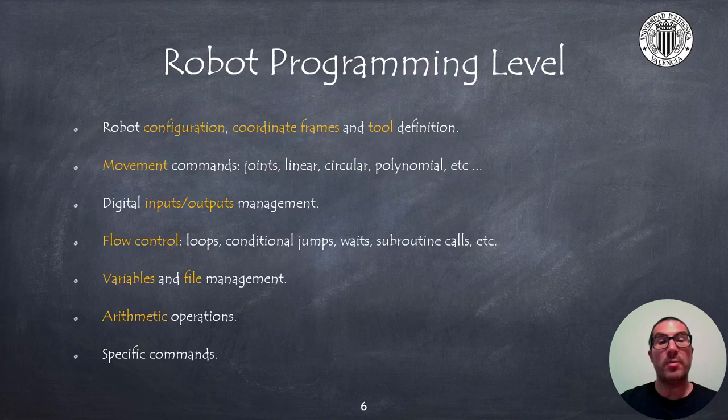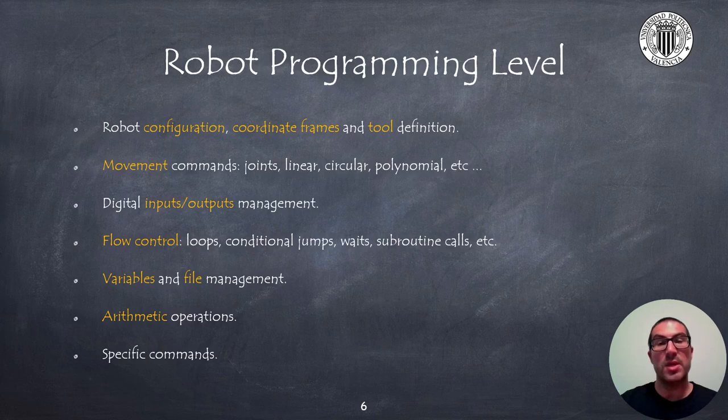In general, all robot programming languages will include a set of instructions that will allow you to define robot configurations, set different coordinate frames, as well as the type of tool. They have movement instructions to control robot joints with coordinated and non-coordinated movements, to perform linear or circular movements, and you can set the maximum admissible speed, acceleration and accuracy. You can also read digital inputs or activate digital outputs connected to the robot controller. Of course, you can control the flow of your program using conventional loop instructions, conditional jumps, waits, routine calls.